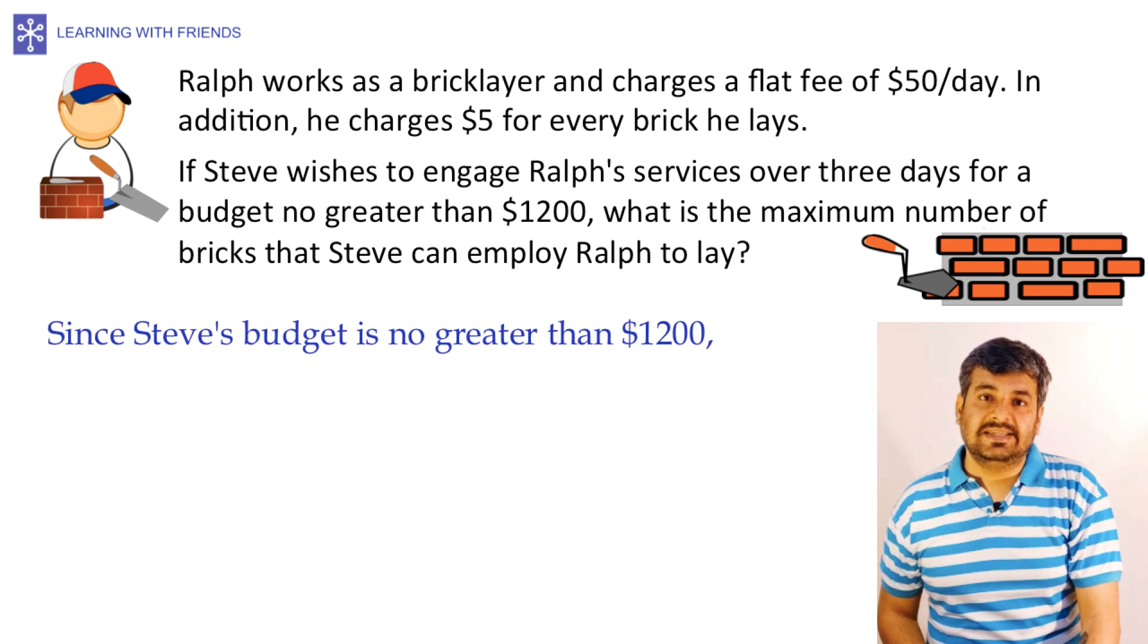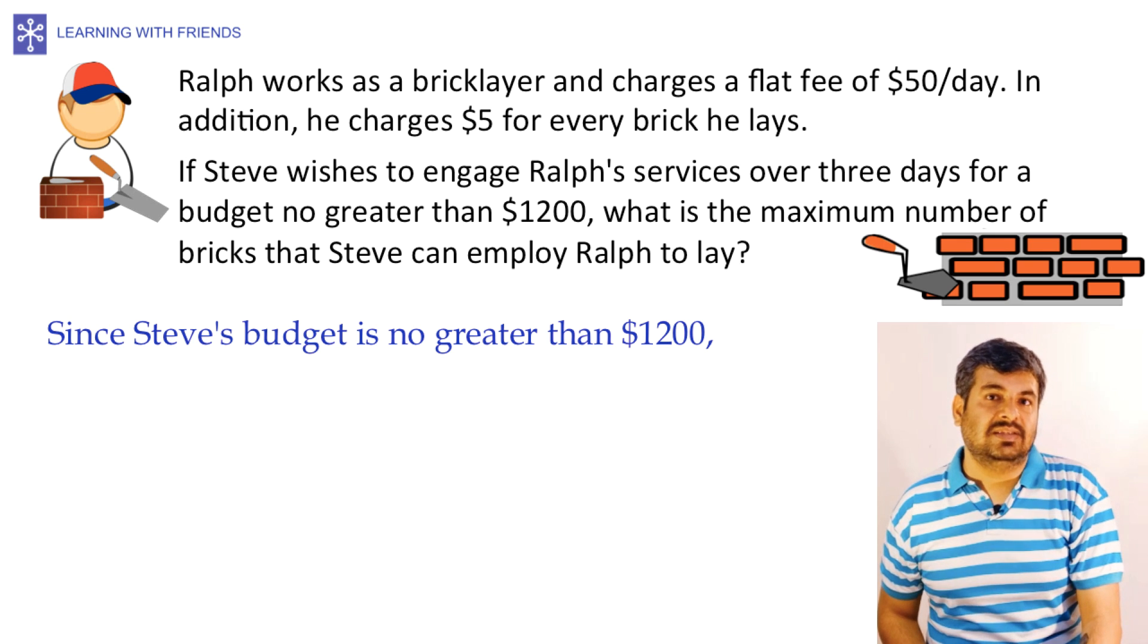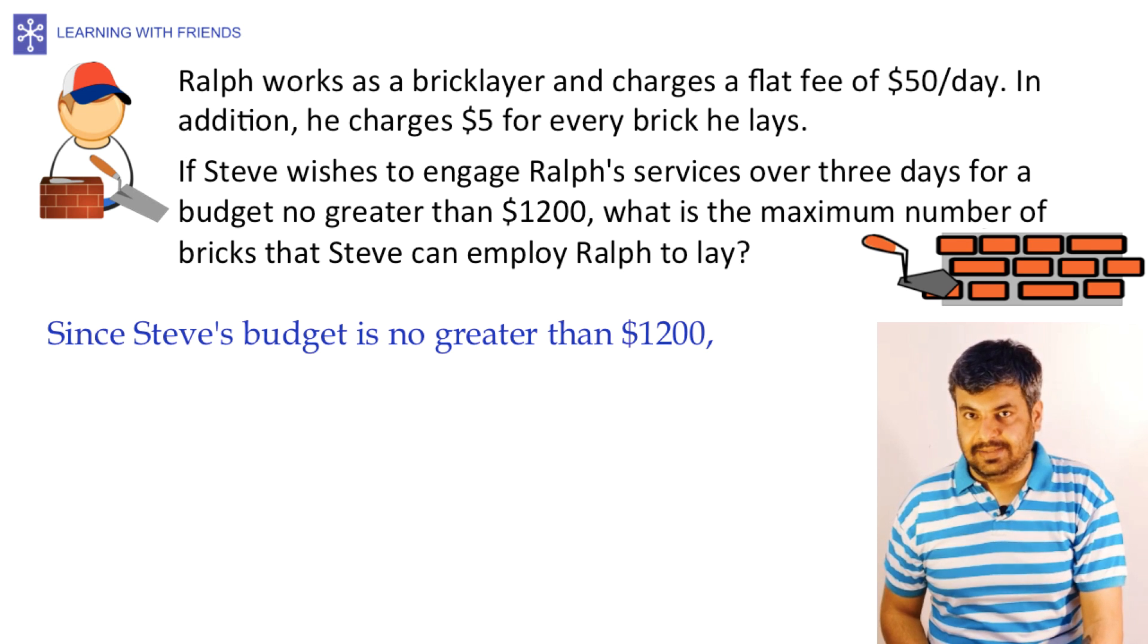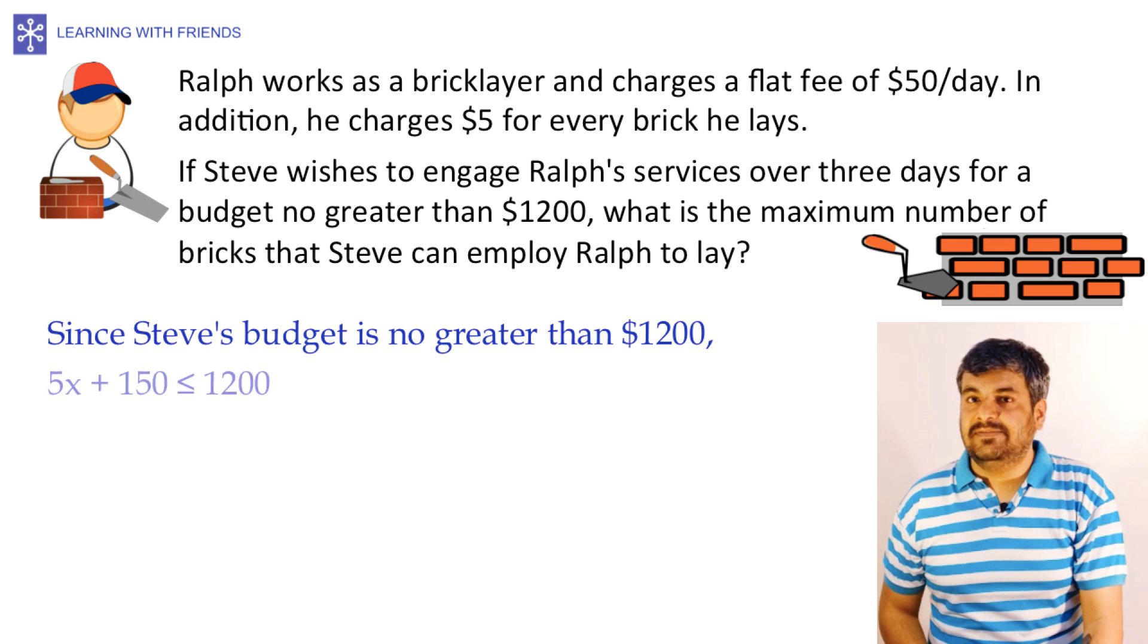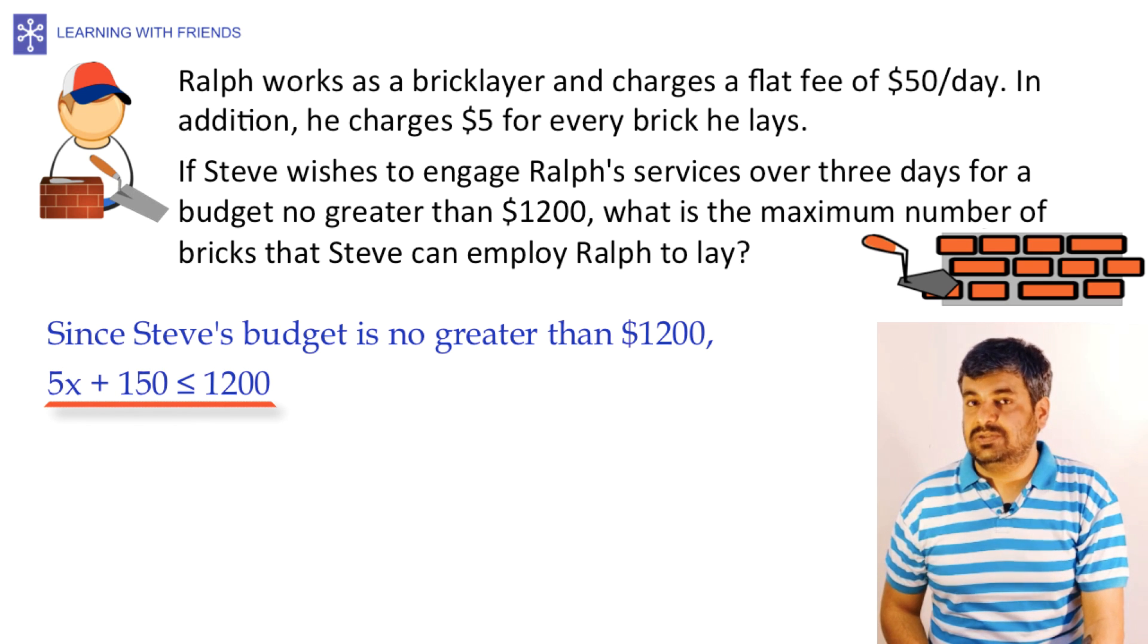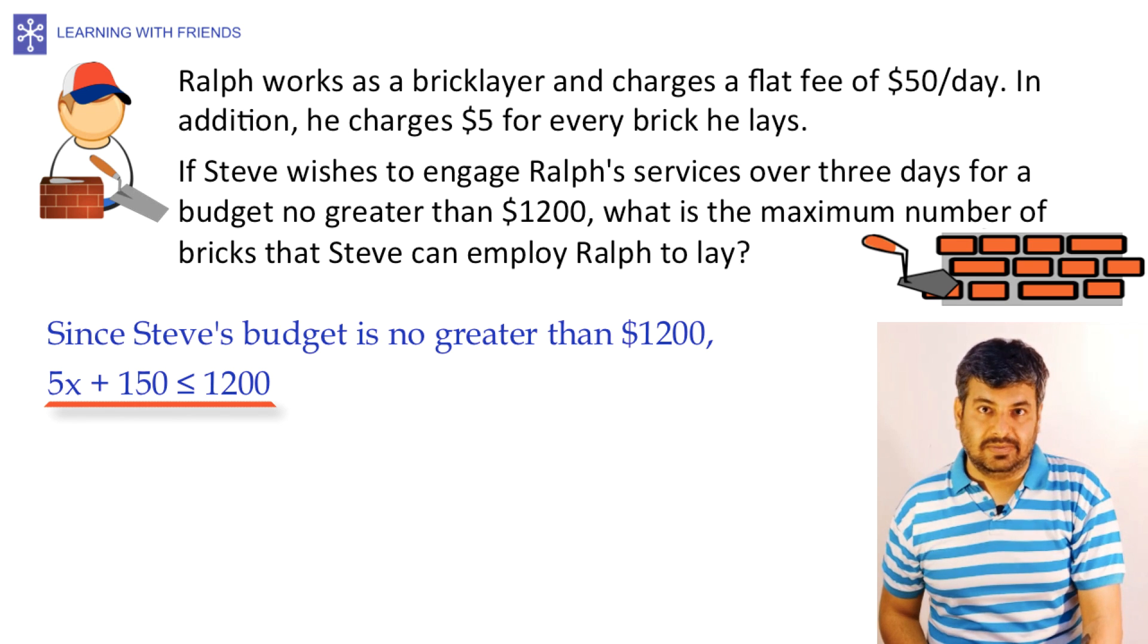Thus the total fee payable to Ralph is 5x plus 150. Now we are told that Steve's budget is no greater than $1200, which means that Steve can spend at most $1200 on the bricklaying. That means that 5x plus 150, which is the total fee that Ralph will command, should be less than or equal to $1200. Because that is exactly how much Steve can pay.